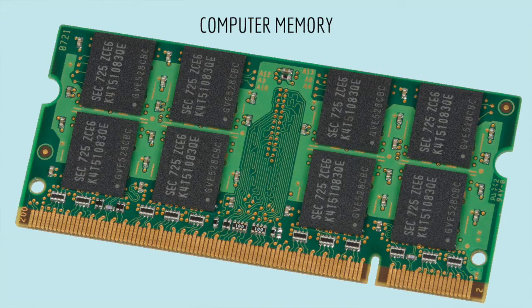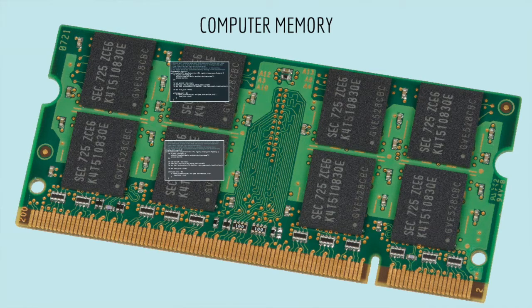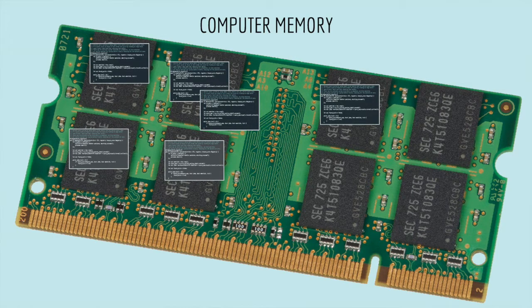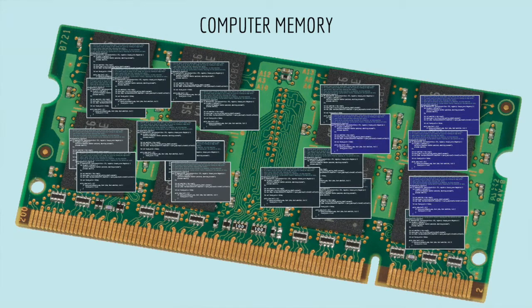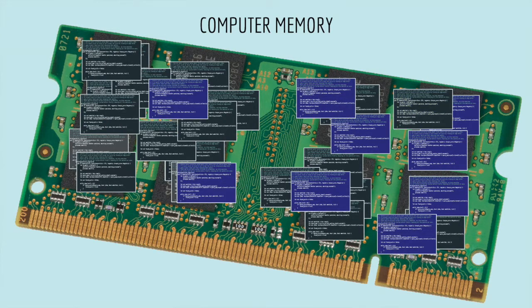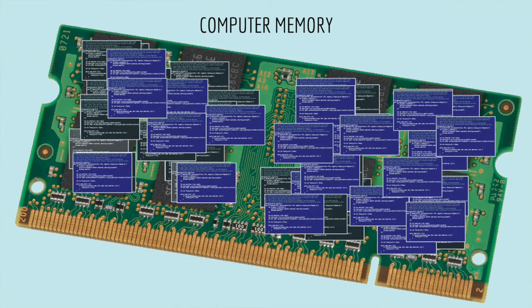If there are multiple computer scripts competing for the same space in computer memory, the scripts that copy themselves fastest will fill up computer memory faster and even be able to overwrite other scripts. And since they're constantly making changes to the computer script when they copy themselves, a new variant might arise by accident that can copy itself even faster — and that new variant would eventually take over. That's natural selection!